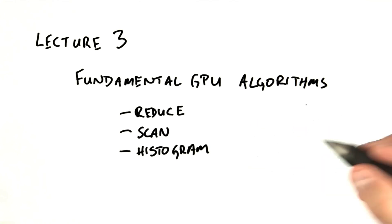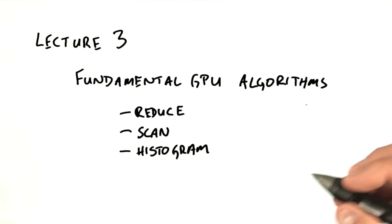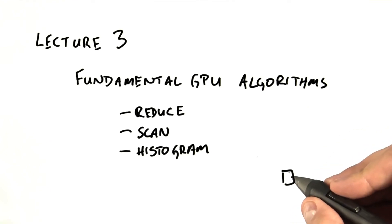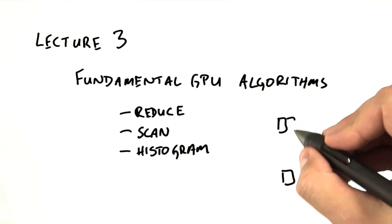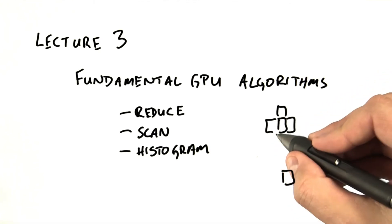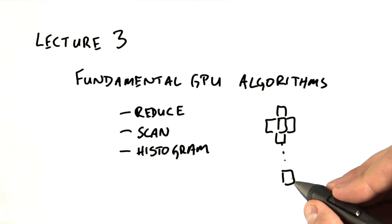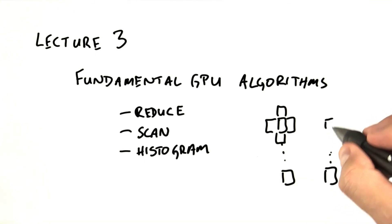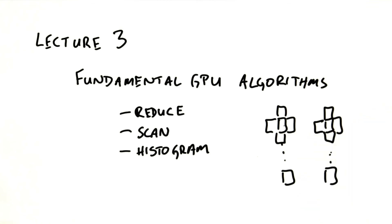It's also great at stencil, or more generally gather operations, like we saw in the last lecture. We might have an item we want to compute, and we go out and fetch several items from memory to do our computation. But the computation of the next item is again completely separate from the computation of the first one.